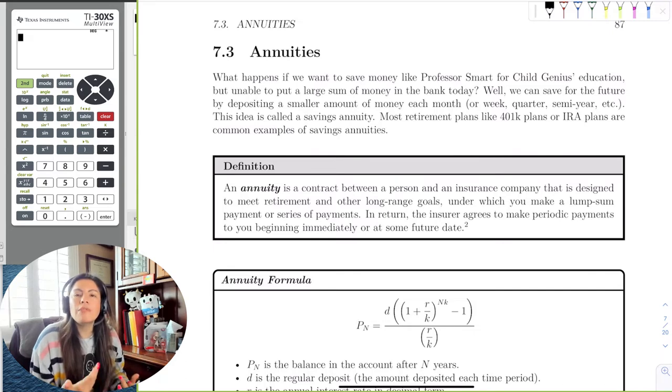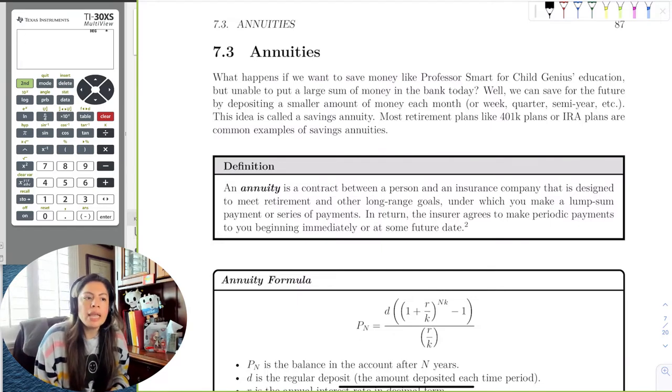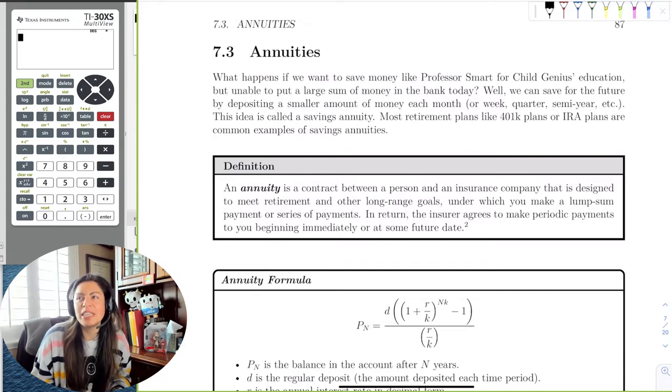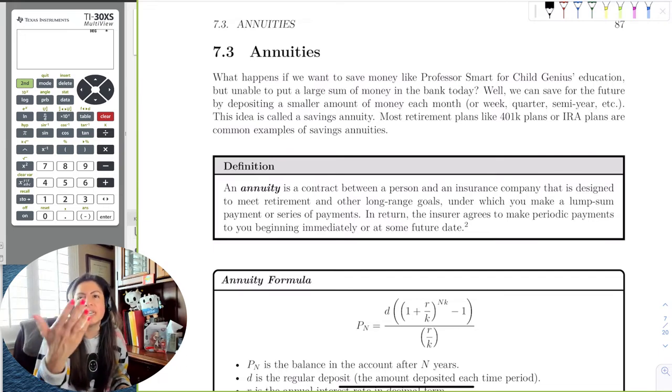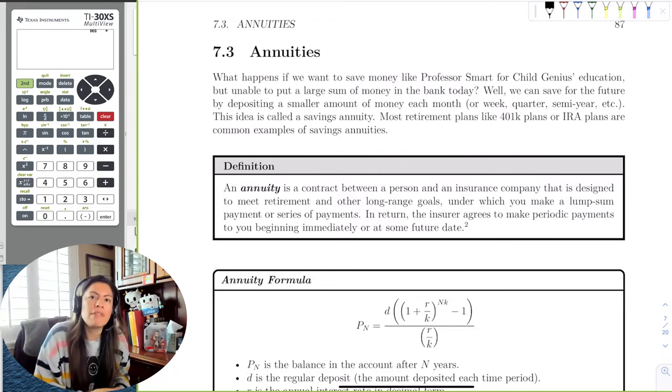So we start off with that problem with Professor Smart saving for child genius's education. As we said before, he would have to put in $9,600 today and let it sit for 16 years to make the $20,000 for the college tuition. Now that's not very realistic because we don't usually save money in one lump sum.